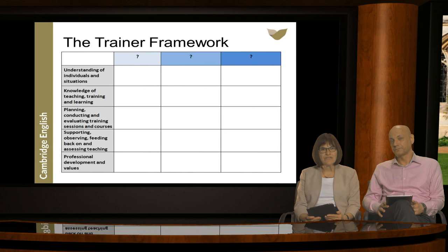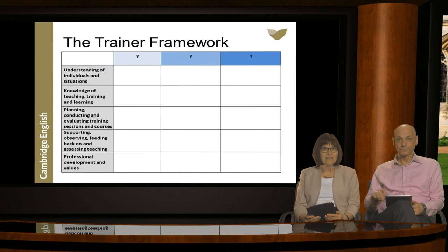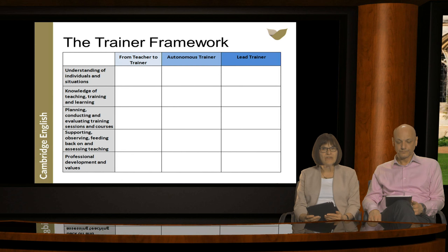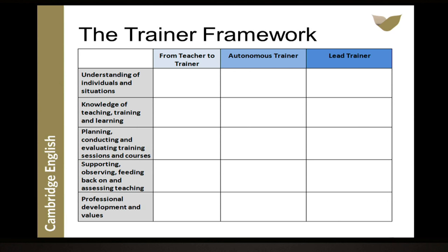Now let's look at the stages of development placed along the top of the grid. Consultation and discussions with trainers around the world, and review by expert consultants, led us to three stages. The first is 'From Teacher to Trainer' — teachers moving into the trainer role, benefiting from support. The second is 'Autonomous Trainer' — a trainer with the skills and confidence to be more independent. Finally, 'Lead Trainer' — an accomplished trainer with skills to support other trainers.